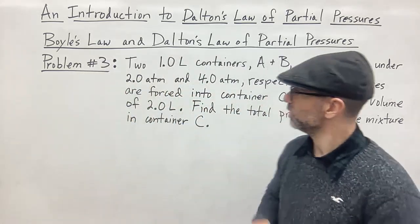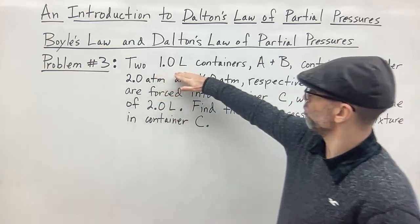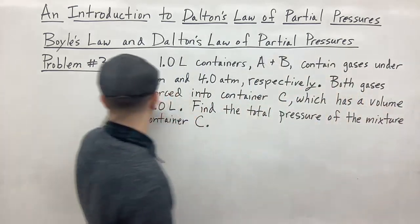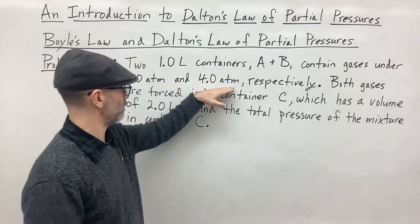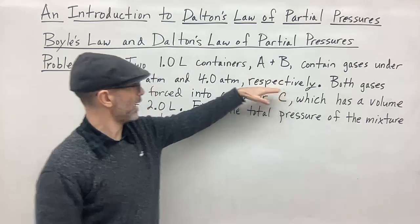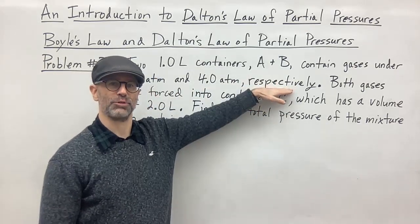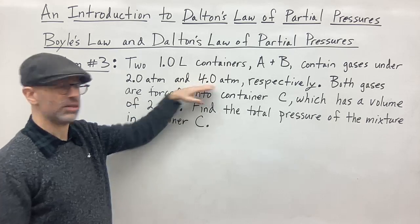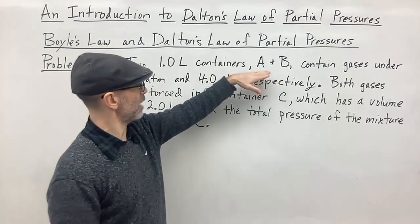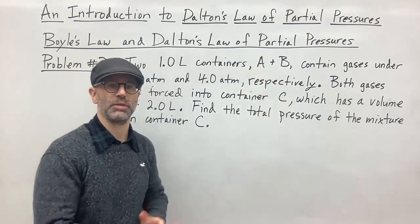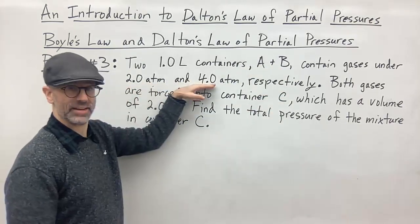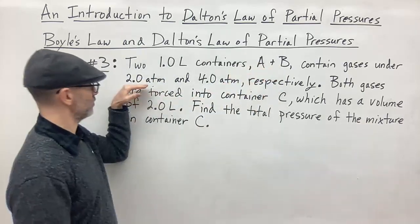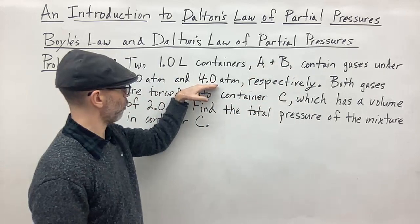For this example we have two 1.0-liter containers. We'll call those A and B and they contain gases under 2.0 atmospheres and 4.0 atmospheres respectively. Respectively means that whatever order these are listed, they're applied to the two previous containers in the same order — so the gas in container A is at 2 atmospheres and the gas in container B is at 4 atmospheres.